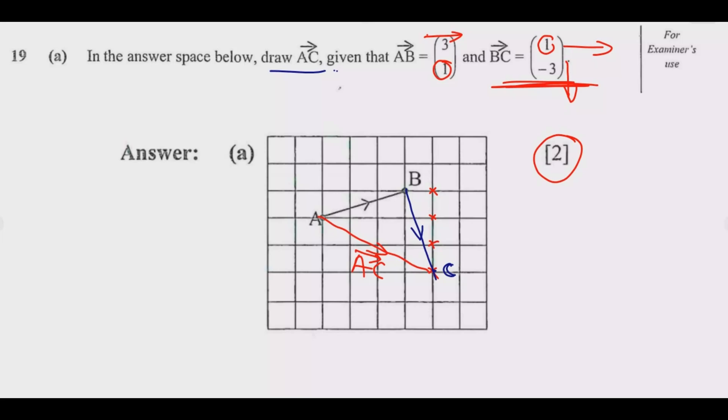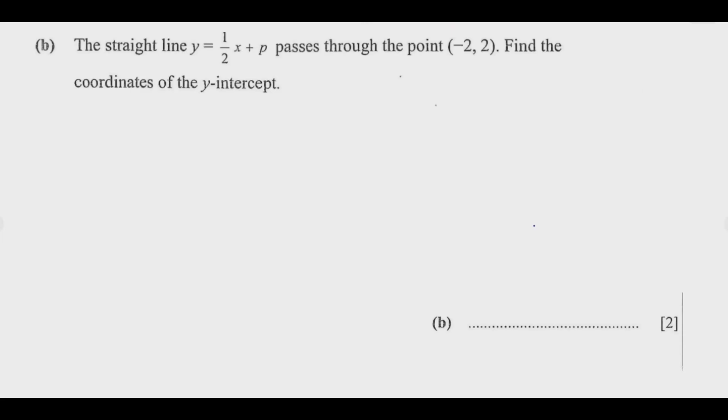You just move to question 19B. The straight line y = ½x + p passes through the point (-2, 2). Find the coordinates of the y-intercept. So we have this point.